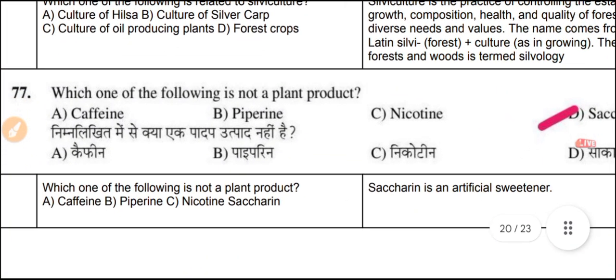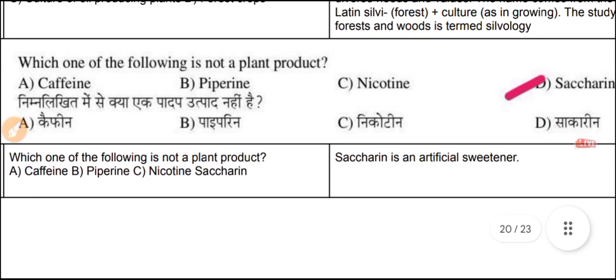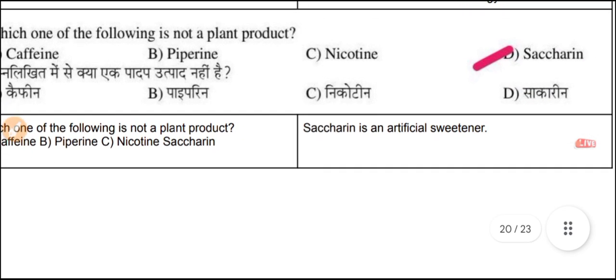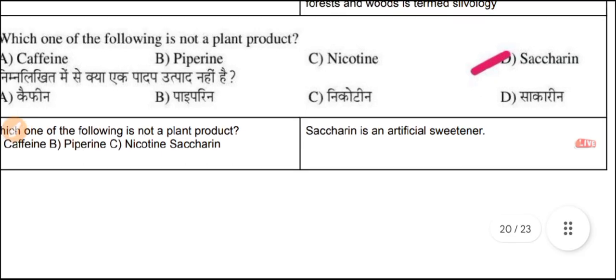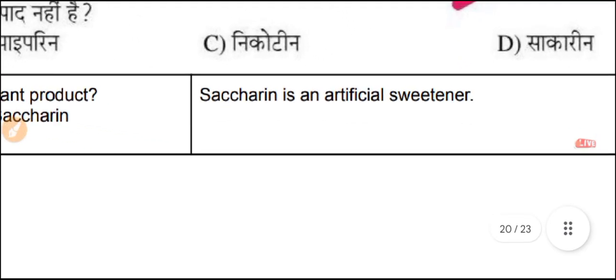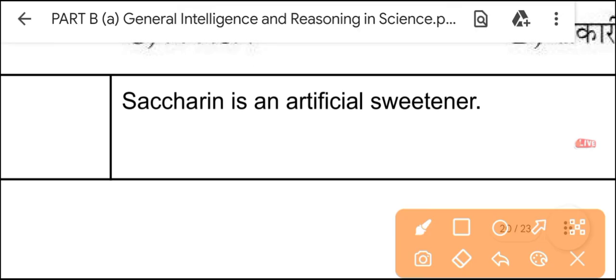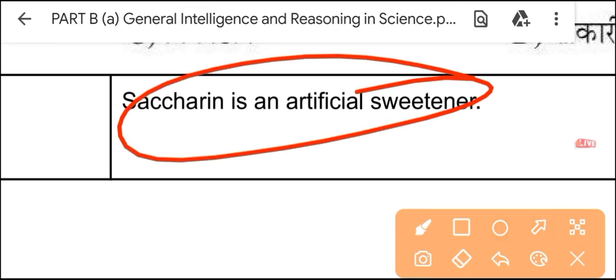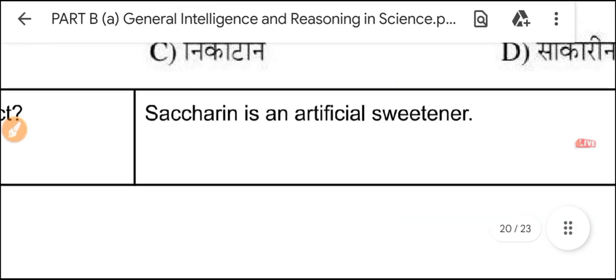Question 77: Which of the following is not a plant product? Saccharin is not a plant product — it is an artificial sweetener.